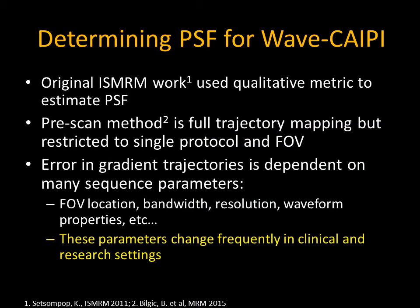Looking at how these results were achieved, going back to the original ISMRM work, a qualitative image space metric was used, followed by a more robust pre-scan method, however that was restricted to a specific orientation and field of view. Gradient trajectory errors can vary based on changing protocol parameters like field of view location, bandwidth, resolution, and waveform properties, which change frequently in clinical and research settings. Our goal was to create something robust to all of these parameters.